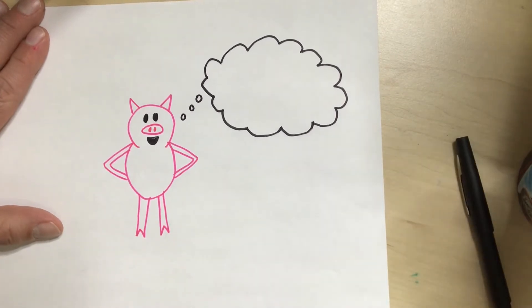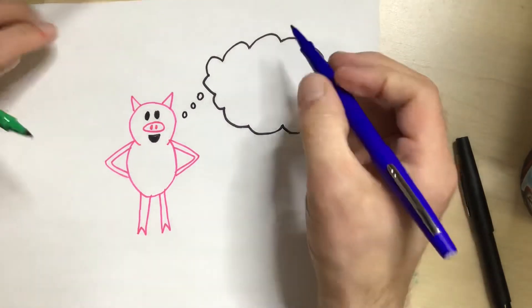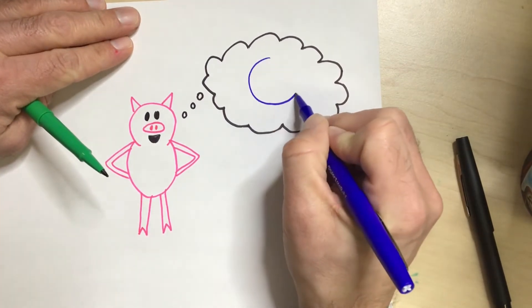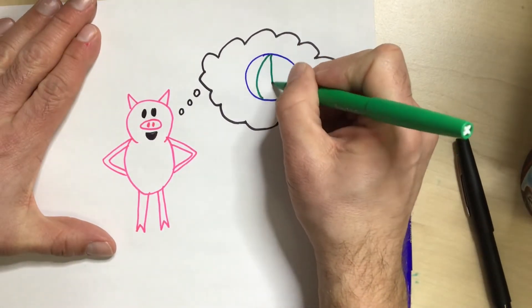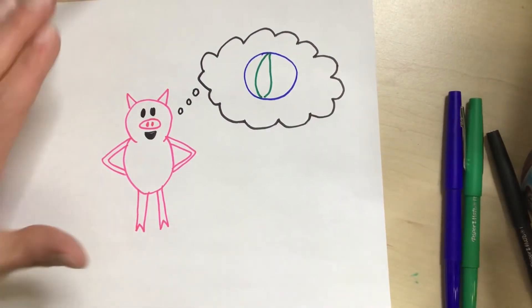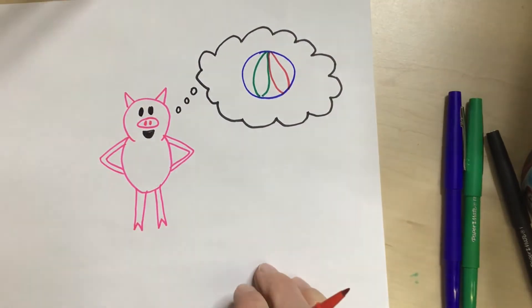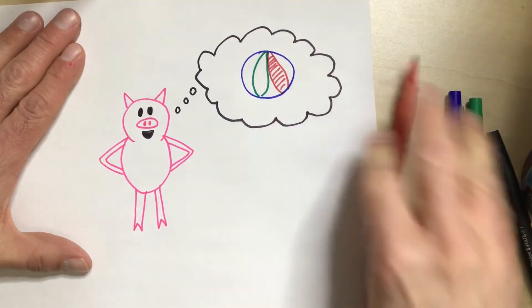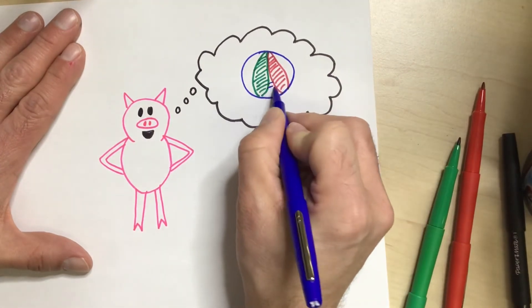And I think Piggy is going to be thinking about playing ball or catch with her really good friend Gerald. So I think I'm not even going to write words. I'm going to draw a picture of kind of a beach ball that maybe Piggy and Gerald might play with. So there is a ball and I could add some detail. I could color in some of these parts. Always good to add detail to your pictures.